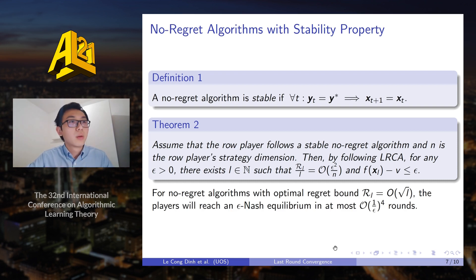So many algorithms have this stability property, such as multiplicative weight update or follow the regularized leader FTRL. We have stability property if there is a fully mixed min-max strategy in the game.